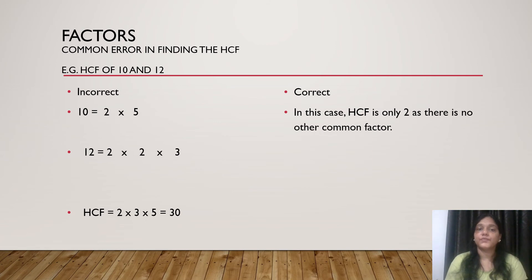Next topic is Factors. The most common mistake in factors is to find out the HCF. There are some rules to find the HCF. Do the prime factorization of given numbers. Find out common factors from these two numbers. And multiply the common factors and we get HCF.